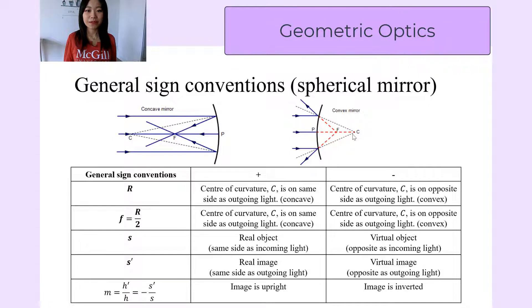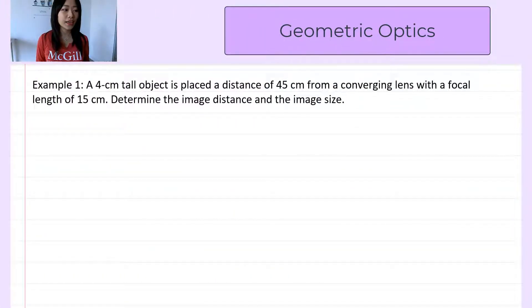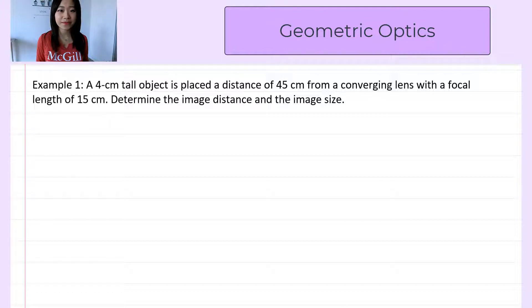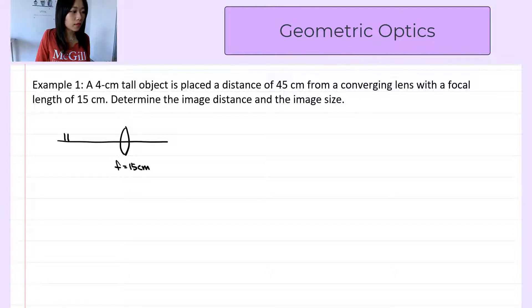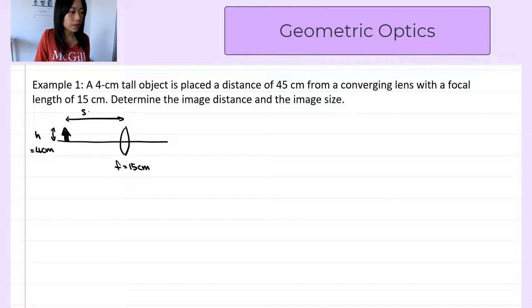Now let's look at two examples. In this first example, we have a converging lens. A 4 cm tall object is placed a distance of 45 cm from a converging lens. The converging lens has a focal length of 15 cm. Determine the image distance and the image size. Let's start with a simple sketch: the converging lens has focal length f = +15 cm, and the object, h = 4 cm tall, is placed at object distance s = 45 cm.